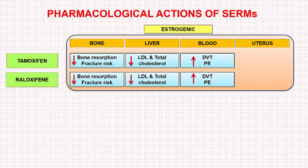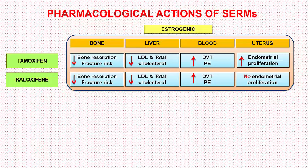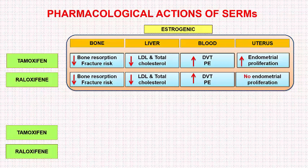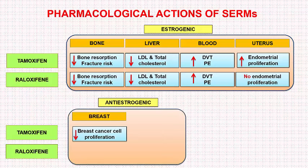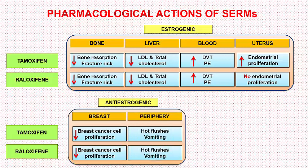Both also act on the uterus, but here there is a contrast. Tamoxifen causes increased endometrial proliferation, hence leading to an increased risk of endometrial cancer, while Raloxifene does not cause increased endometrial proliferation, so there is no increased risk of endometrial cancer. Regarding anti-oestrogenic effects, both Tamoxifen and Raloxifene have anti-oestrogenic effects on the breast, leading to decreased breast cancer cell proliferation, and on peripheral tissues, leading to hot flushes and vomiting.